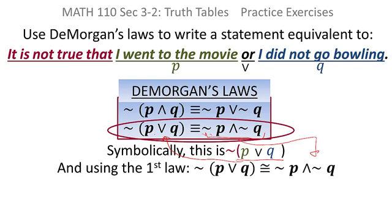The right hand side says you change an or to an and, and the negation gets distributed. So the negation goes with the P and with the Q, and the or becomes an and. We've done multiple problems with these, so you should have that idea now.